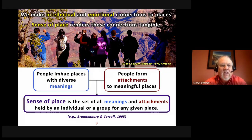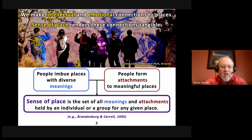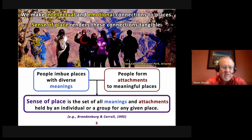Scholars of place have said that we make both intellectual and emotional connections. We understand these places — it might be a place where you studied, where you liked to play as a child, or where your family comes from. That's intellectual connection. At the same time, we often have very strong emotional connections; we feel attached to places. In some cases we may have an aversion, but typically it's a positive emotional connection. People imbue places with diverse meanings, and when we combine that set of meanings with that set of attachments, we have what's called sense of place.